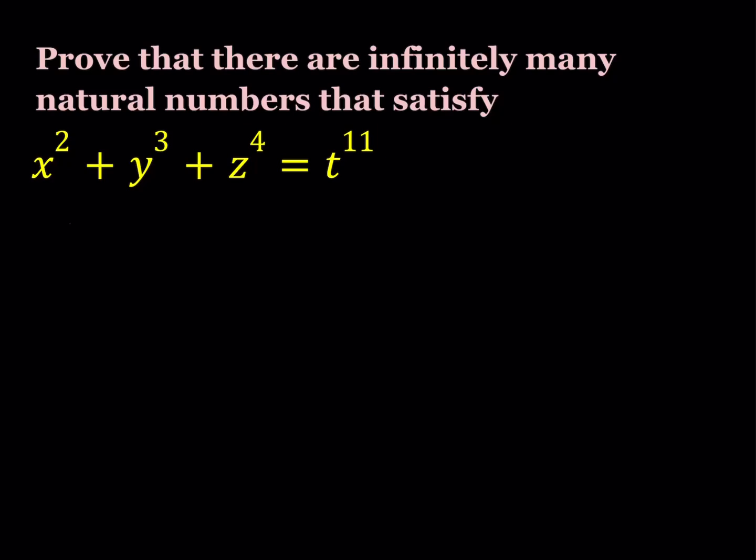Hello everyone, in this video we're going to be solving a number theory problem from Junior Balkan Math Olympiads. Prove that there are infinitely many natural numbers that satisfy x squared plus y cubed plus z to the fourth equals t to the power 11. So we're not trying to find all solutions to this equation, we're just proving that there will be infinitely many.